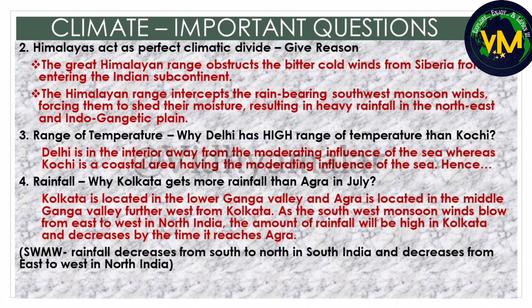The most important question is about the Himalayas - why do they act as a perfect climatic divide? Also learn the factors affecting the climate of India. When they ask about the range of temperature, usually the question will be why Delhi has a higher range of temperature than Kochi. Whenever you have a question related to range of temperature, one place will be in the interior and one will be a coastal area. Delhi is in the interior and Kochi is a coastal area. Remember, coastal areas have the moderating influence of the sea, which is why the range of temperature will be less.